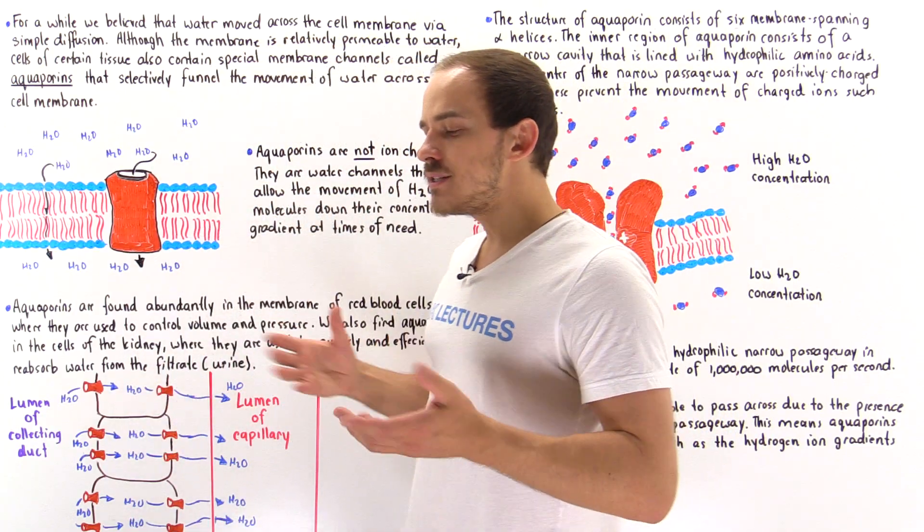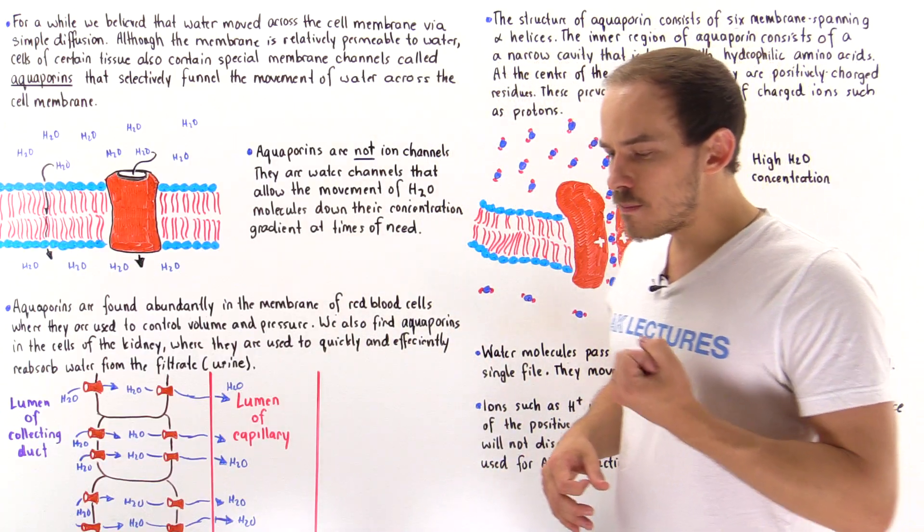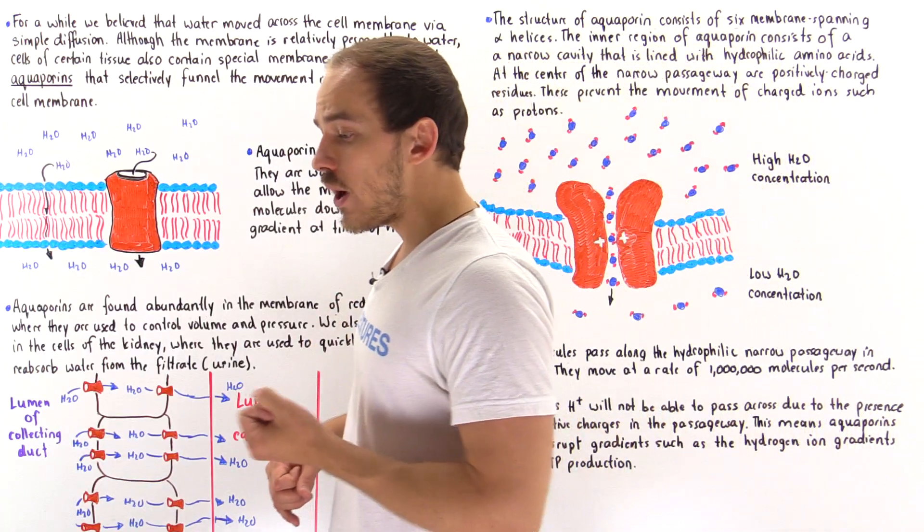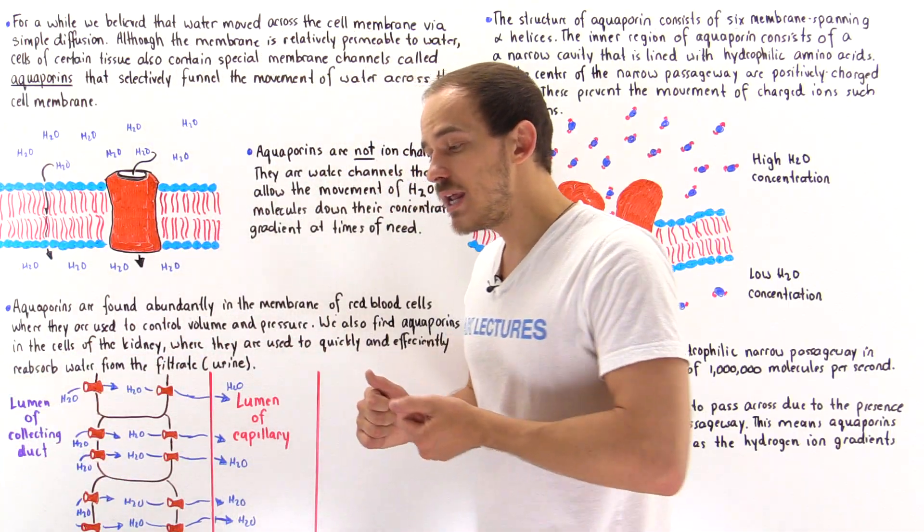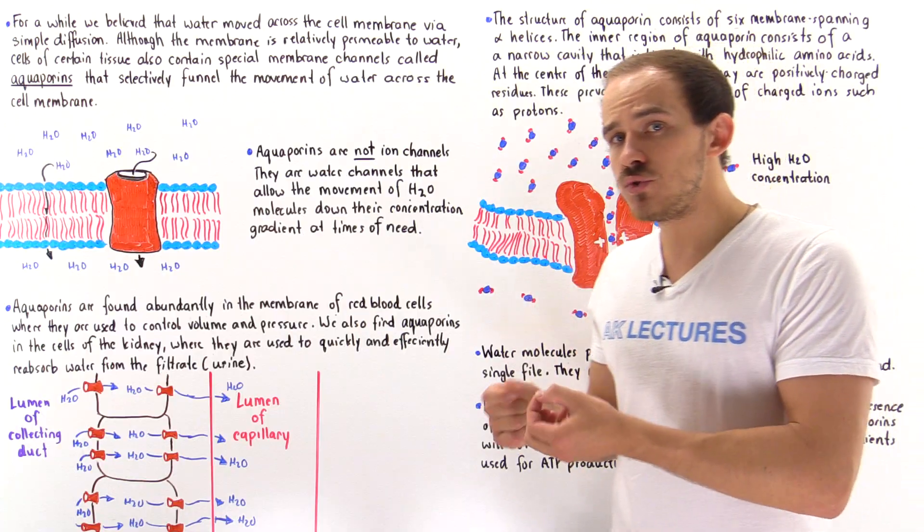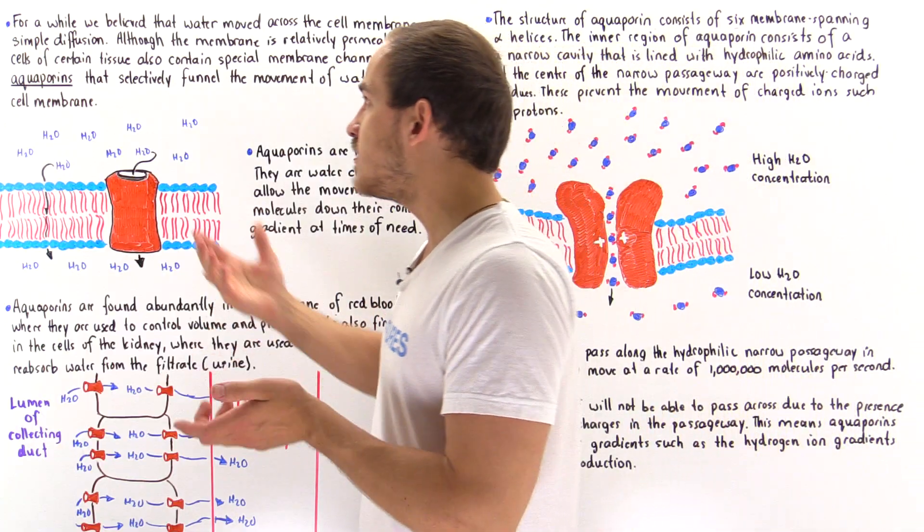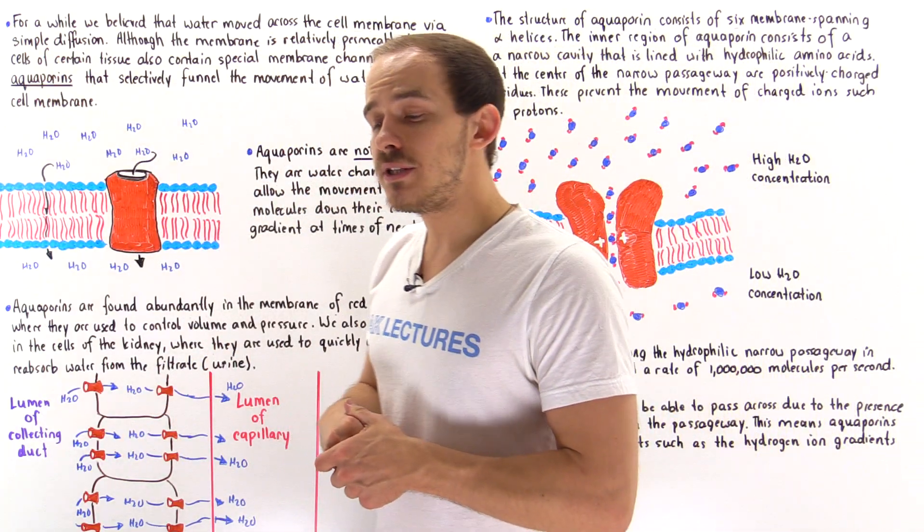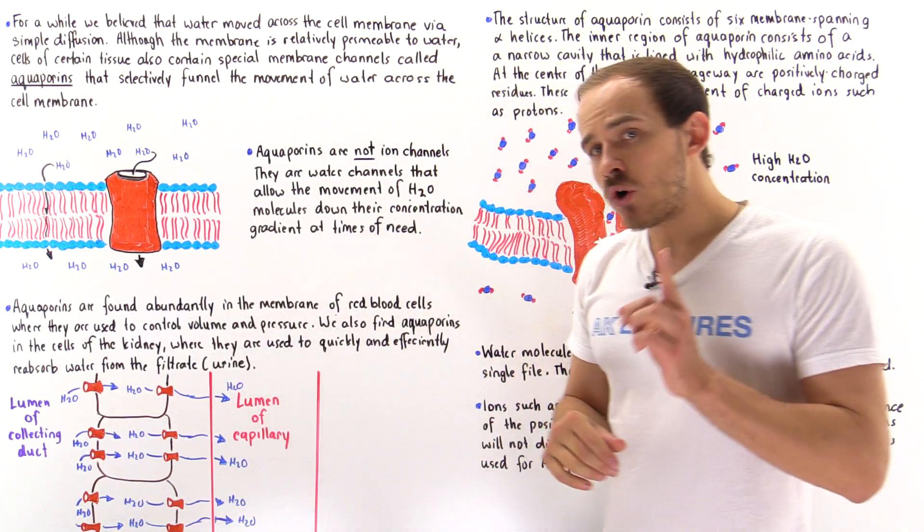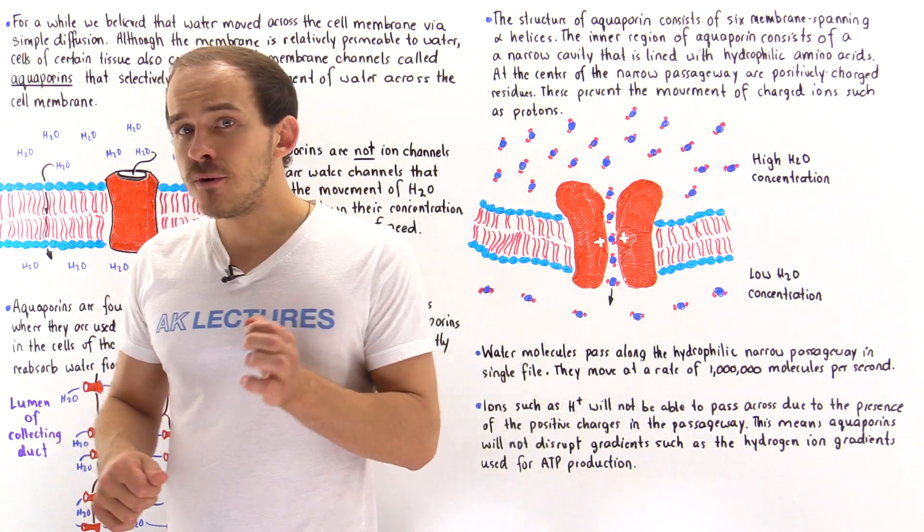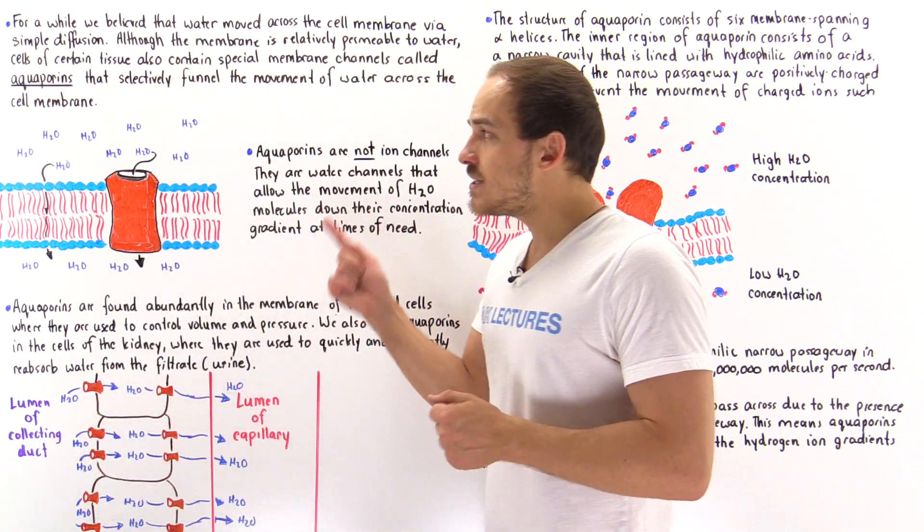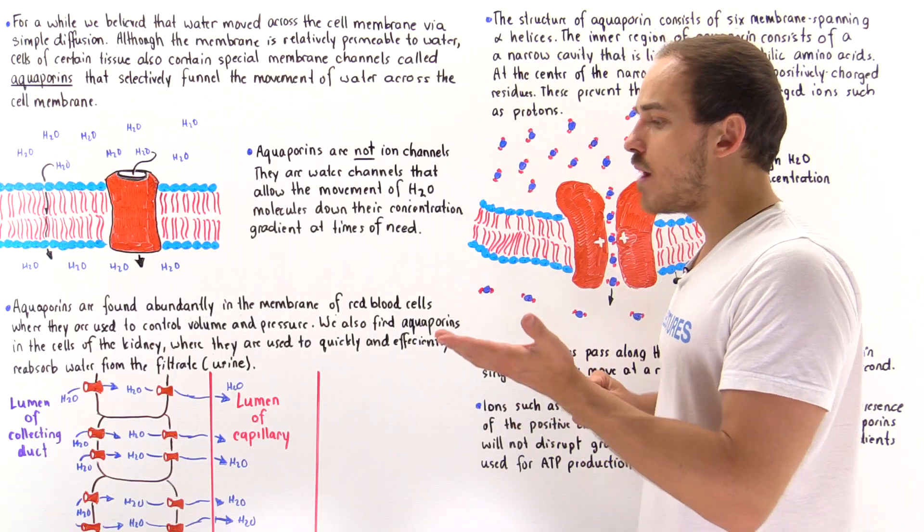For quite some time we believed that the only way water molecules can actually make their way across a membrane is by diffusing through that membrane. This process is known as simple diffusion. We weren't actually wrong to think that because the membrane is in fact permeable to water.